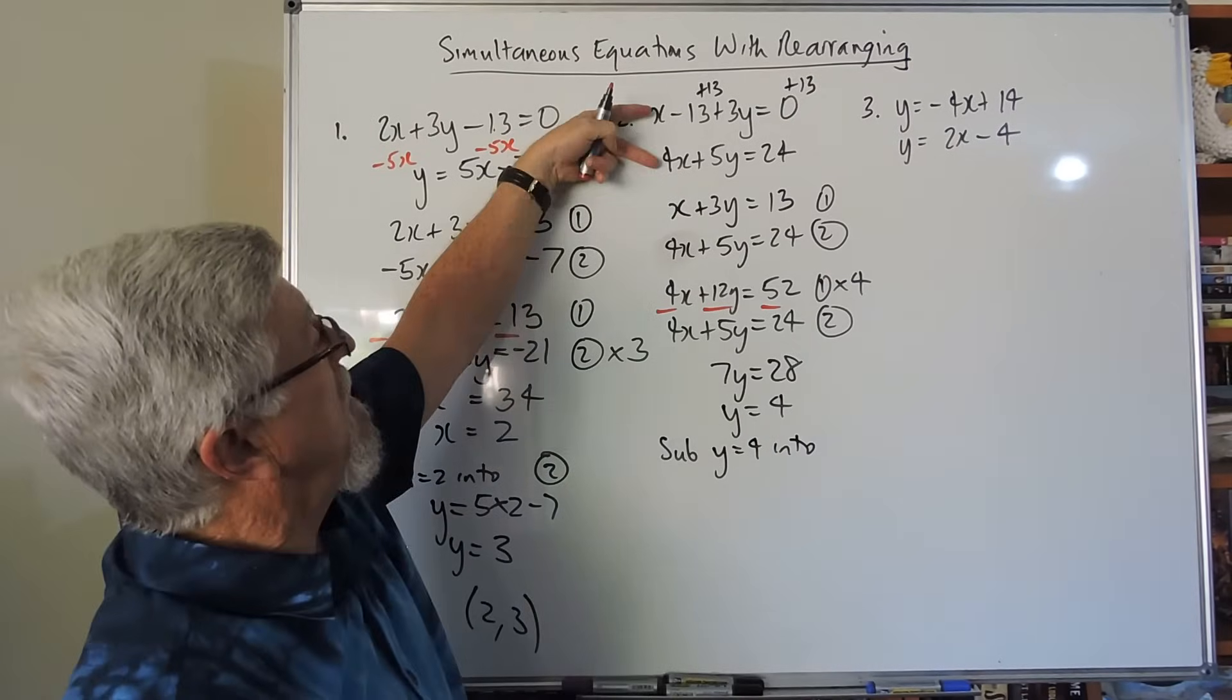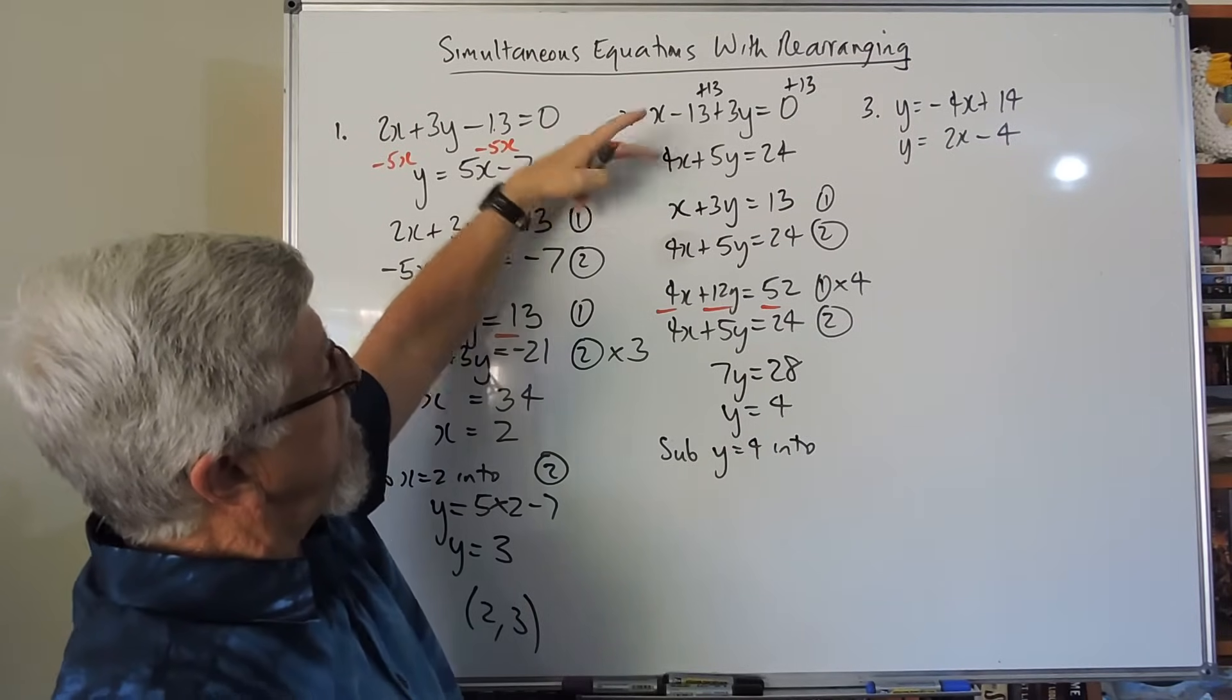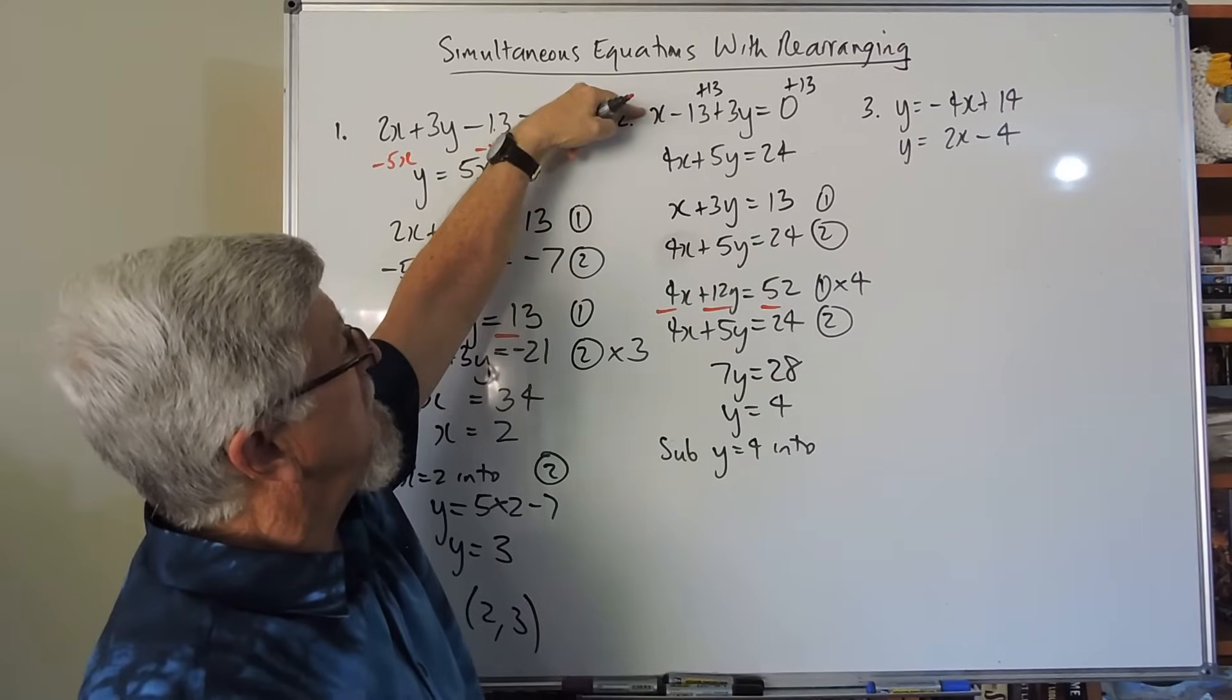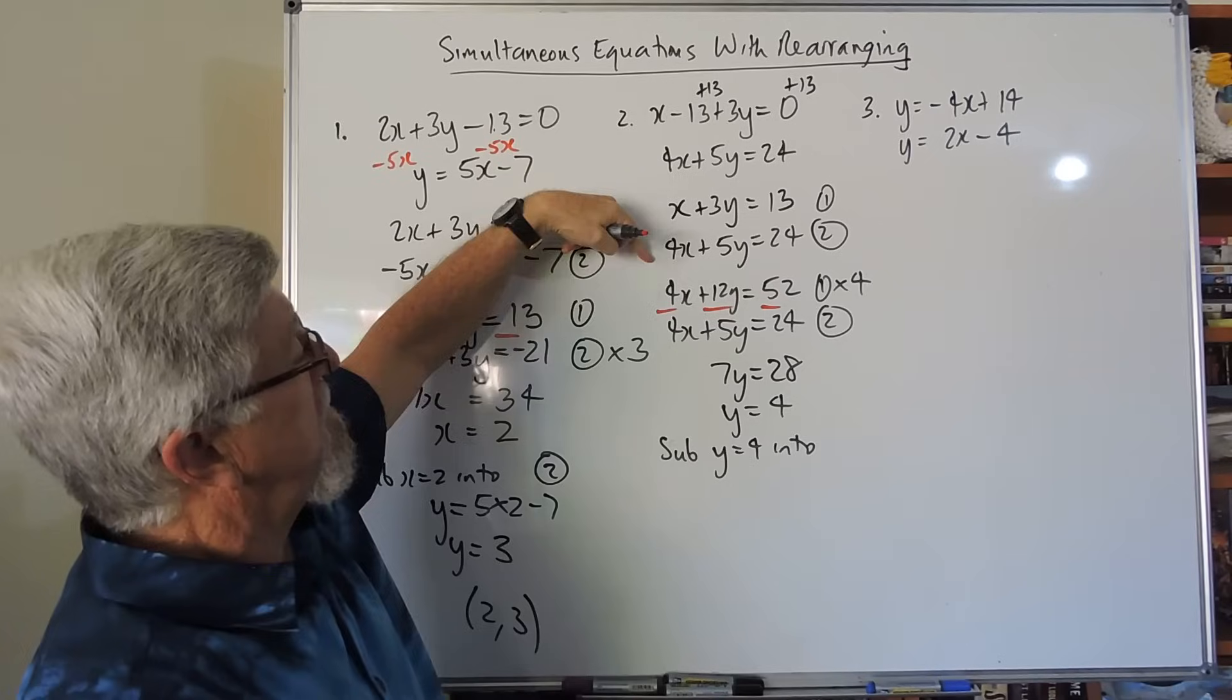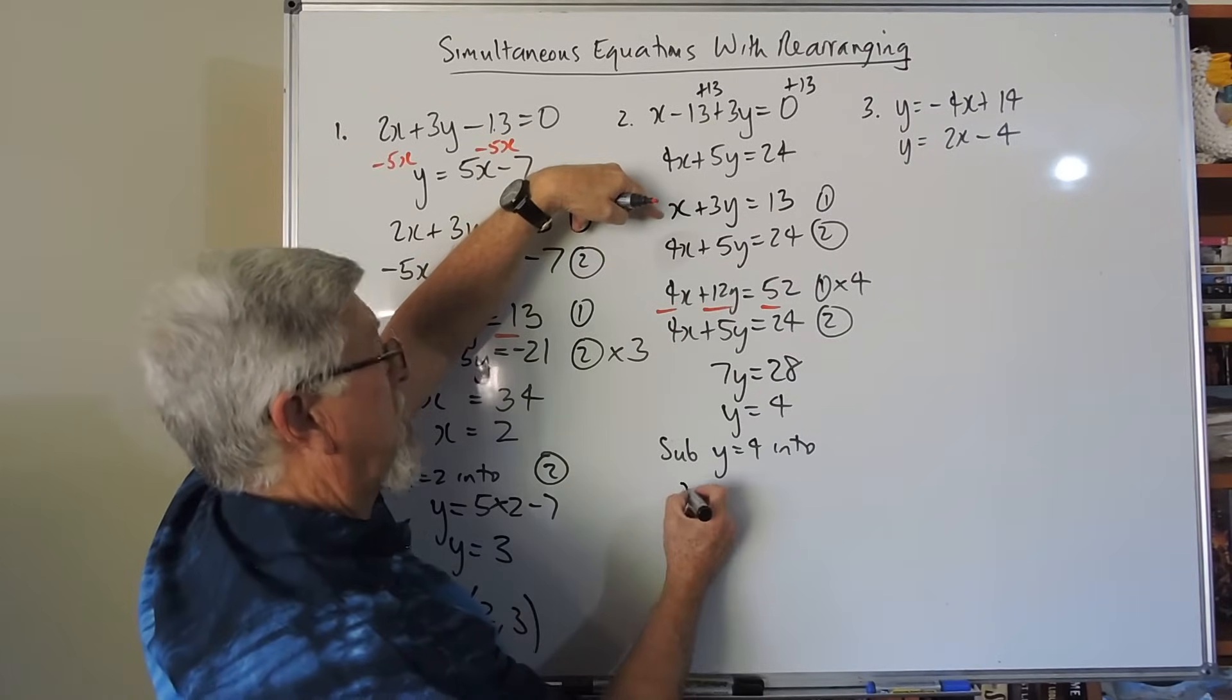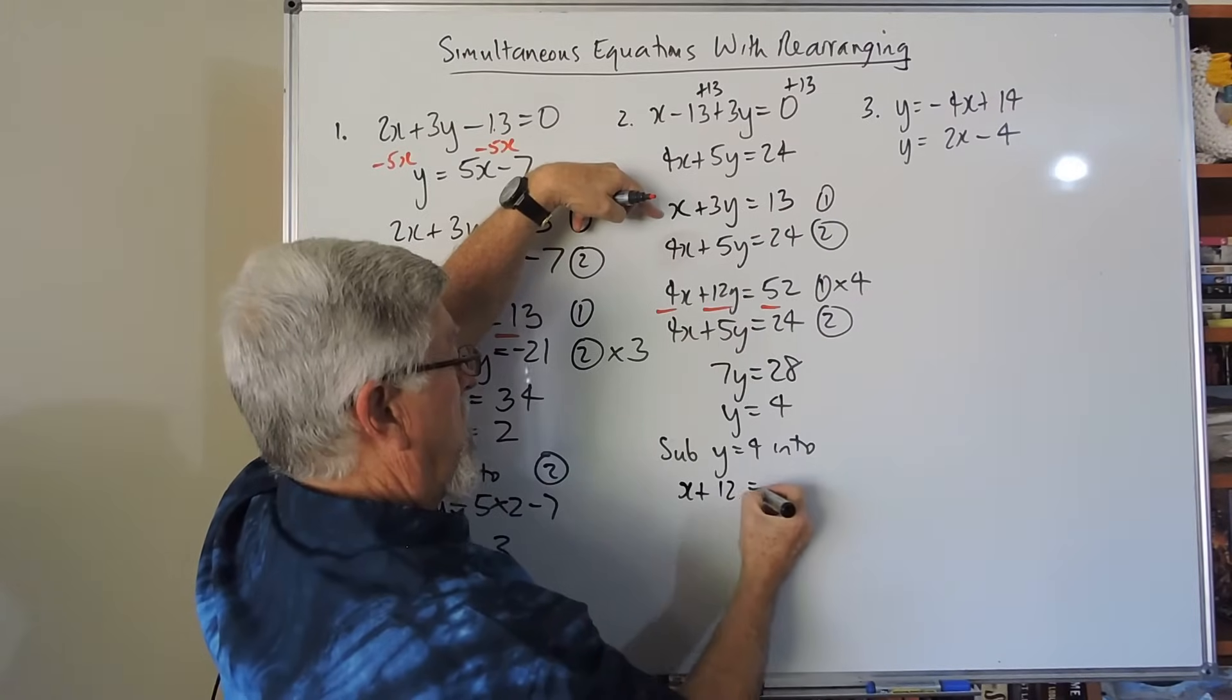Substitute y equals 4 into... I'm going to have a look at these two and go, yeah, I think I'd still prefer that one there. The interesting thing is, I could have done it there. I could have even done it down here. It doesn't matter where. I'm going to pick that one there. So I've got x plus... I'm going to shortcut it. 3, 4 to 12 equals 13.